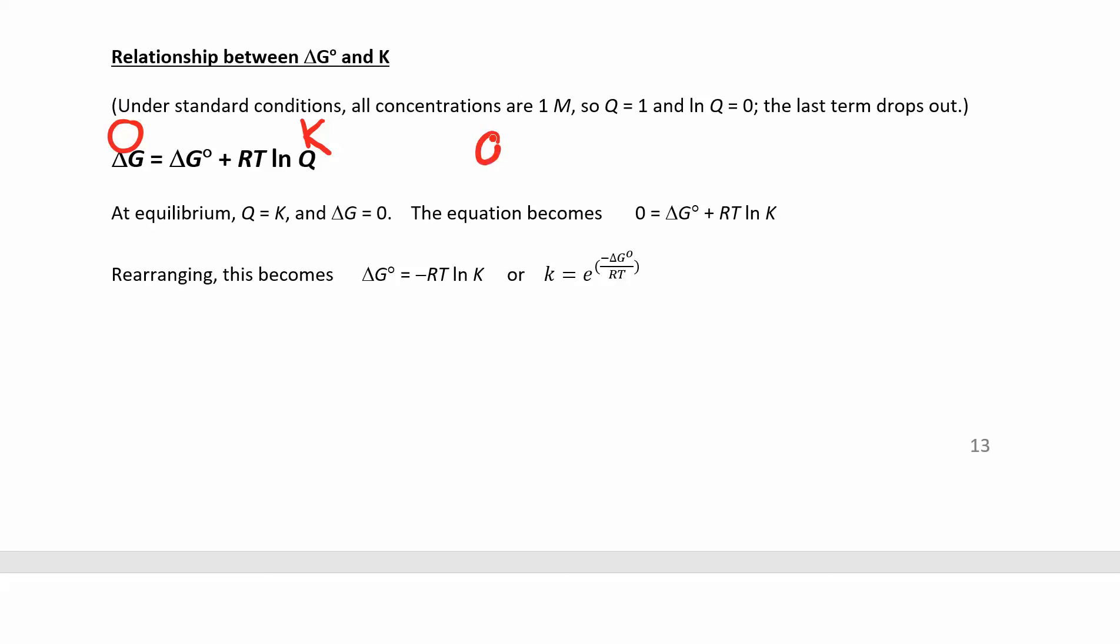If you have 0 equals delta G naught plus RT ln of K, and you just want to solve for delta G naught, you can subtract out this RT ln of K on both sides. And you end up with this equation: Delta G naught equals negative RT ln of K. So you can relate delta G naught under standard conditions with the equilibrium constant.